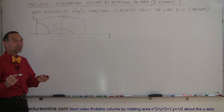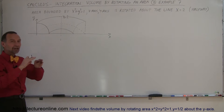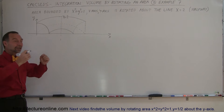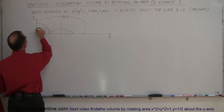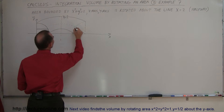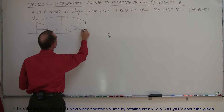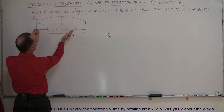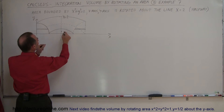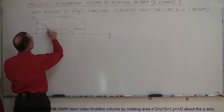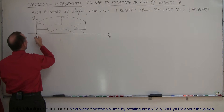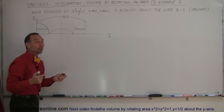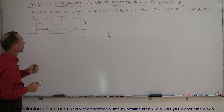How do we do that? Well, it all comes down to finding the correct DV — the correct slice that we can integrate upon. If we slice it in this direction, we can see that the inner radius of the slice, because it would be like a half washer, goes from the axis of rotation to the curve x squared plus y squared equals 1, and the outer radius goes to the y-axis, i.e., x equals 0.